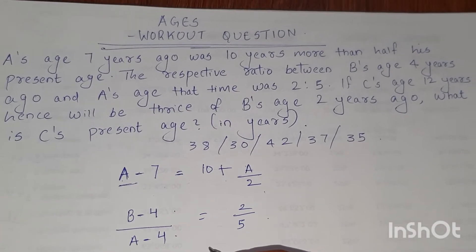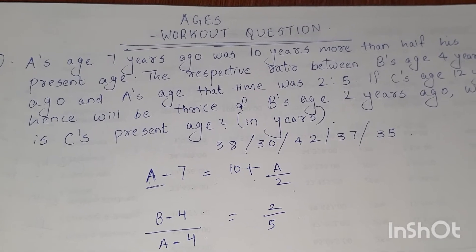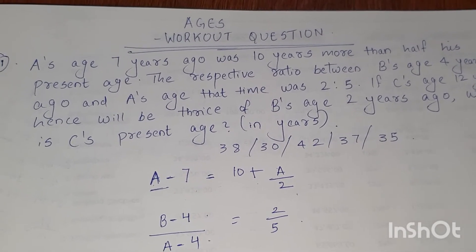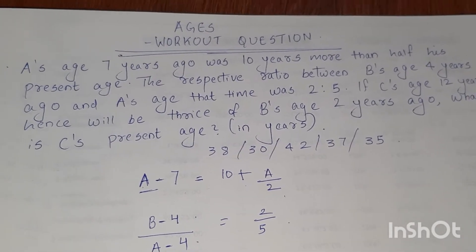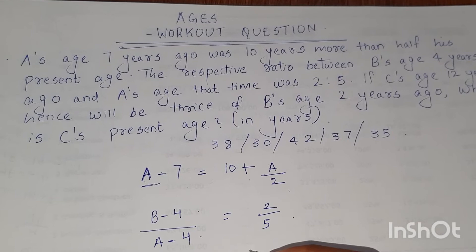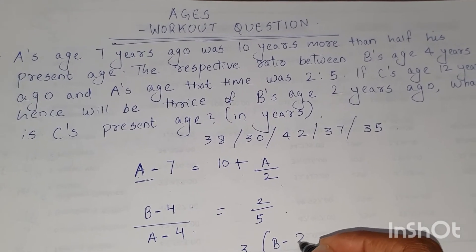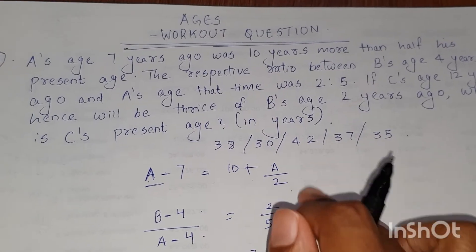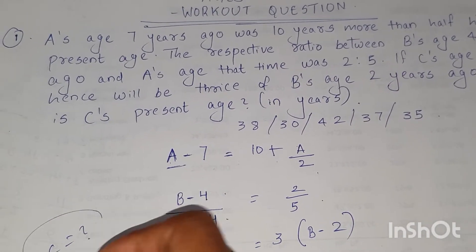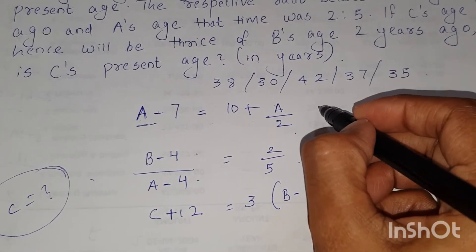The third equation: if C's age 12 years hence — let C's present age be C, and 12 years hence means C plus 12. If C's age 12 years hence will be thrice of B's age 2 years ago, that is B minus 2. So we got 3 equations and the question is: what is C's present age? You have to find the present age of C, so we can solve these three equations.